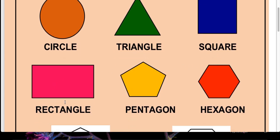Next shape is rectangle. Yeh bhi hum sab jante hai. Rectangle ke jo opposite sides hote hai woh equal hote hai. So rectangle is the shape which is having four sides, and the opposite sides of the shape are equal.